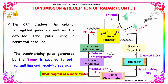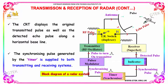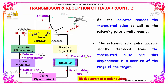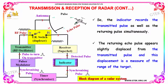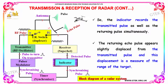The CRT displays the original transmitted pulse as well as the detected echo pulse along a horizontal baseline. The synchronizing pulse generated by the timer is supplied to both transmitting and receiving systems. The indicator records the transmitter pulse as well as the returning pulse simultaneously. The returning echo pulse appears slightly displaced from the transmitter pulse, and this displacement is a measure of the range of the target.